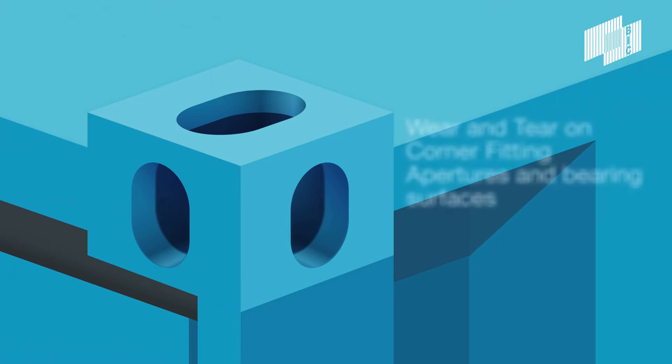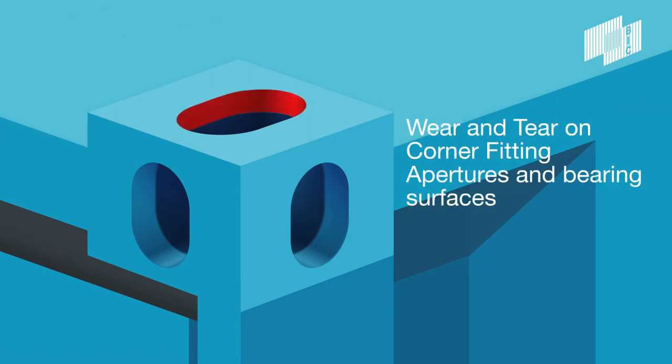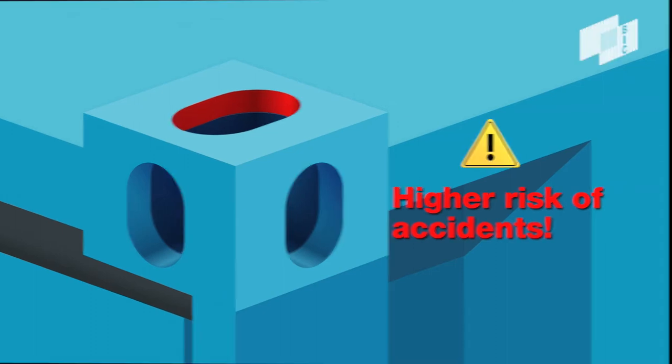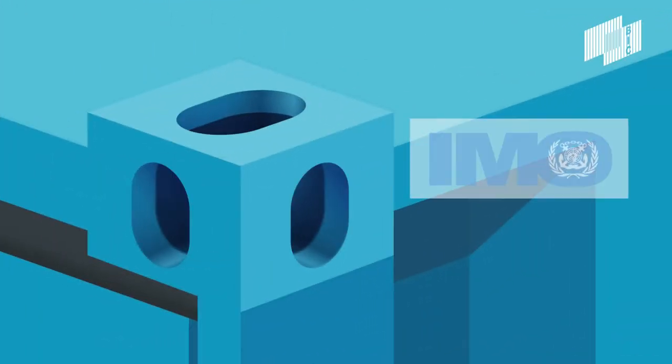Over time, normal wear and tear enlarges the size of corner fitting apertures and reduces the thickness of the top plate, which increases the risk of accidents, including containers lost overboard.